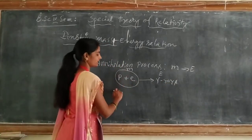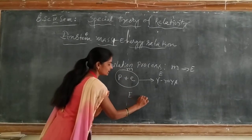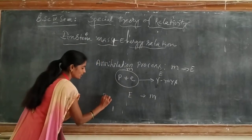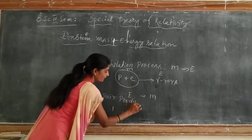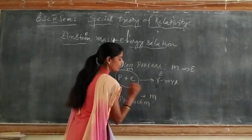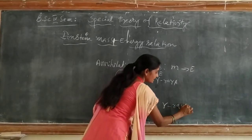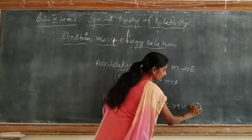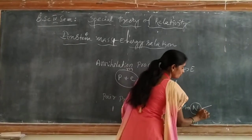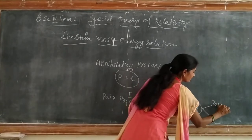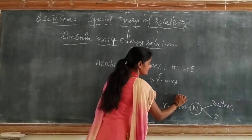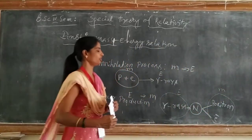In the reverse process, how is energy converted into mass? In the case of pair production, energy is converted into mass. When gamma rays are incident on a nucleus, the nucleus produces two light particles — one positron and one electron. Here, energy is converted into mass.